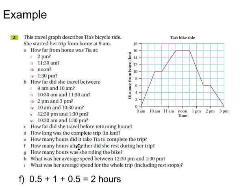And then F: How many hours altogether did she rest during the trip? So I'm looking for the horizontal line. There's half an hour there, so that's 0.5. We've got 1 here from 11:30 till 12:30, so that's 1. And another half hour down here. So 0.5 plus 1 plus 0.5 equals 2 hours.